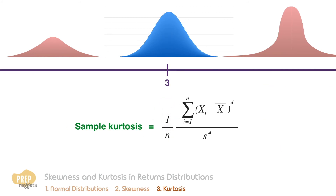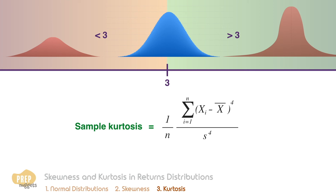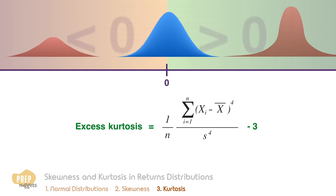The sample kurtosis of a normal distribution is three. Hence any number above three suggests the distribution is leptokurtic, while any number below three suggests a platykurtic distribution. This scale is sometimes adjusted to excess kurtosis, where positive values indicate a leptokurtic distribution and negative values indicate a platykurtic distribution.